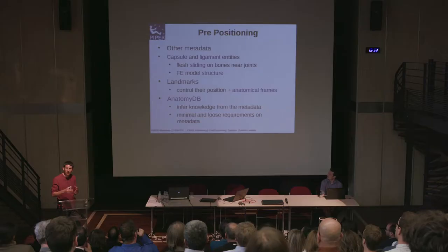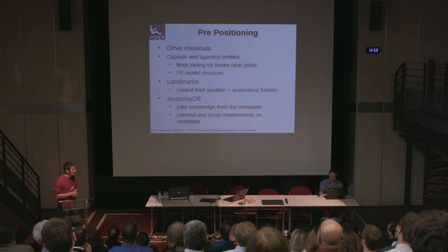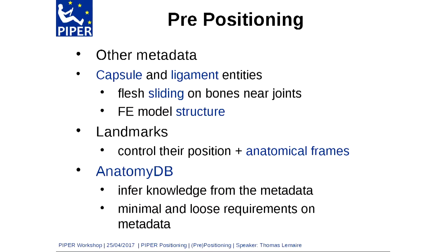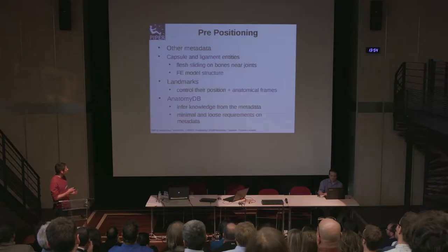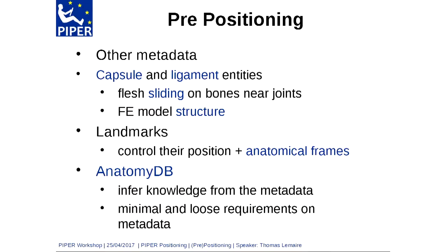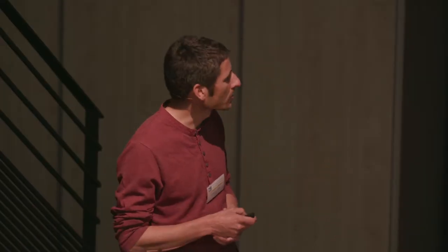The flesh deforms the most around moving joints, and elements at those locations can get bad quality. So the flesh needs to slide on the bones, which is why we implemented sliding contacts. Ligament entities inside the capsules generate collisions between bone, capsule, and ligaments to respect the desired kinematics. Landmarks are used to control position and compute anatomical frames of reference. We also make intensive use of the anatomy database — a catalogue of entity names and landmarks — from which we can infer knowledge to build the simulation, such as identifying which bones are close together to add collisions.